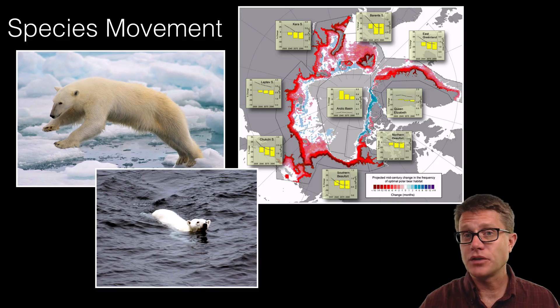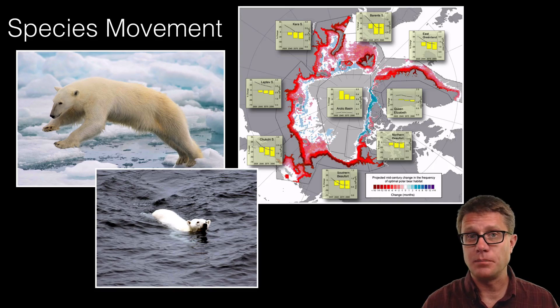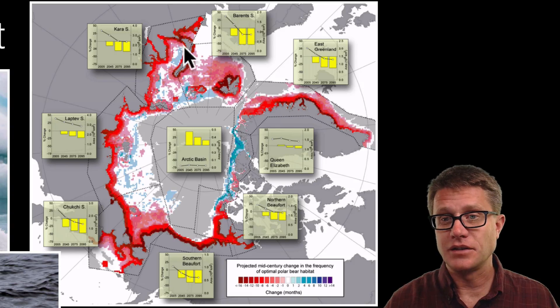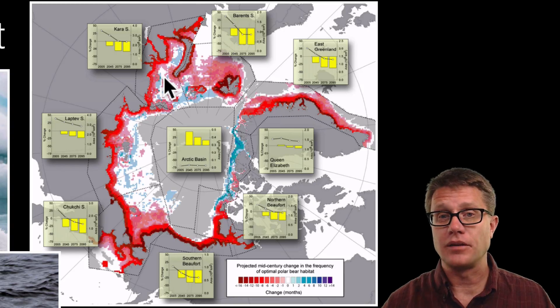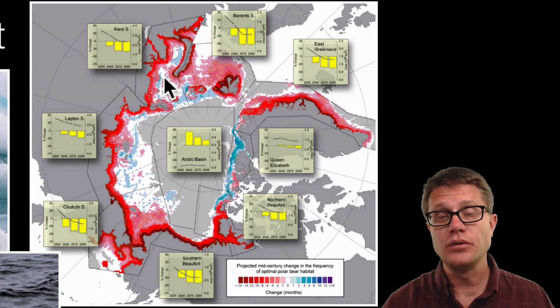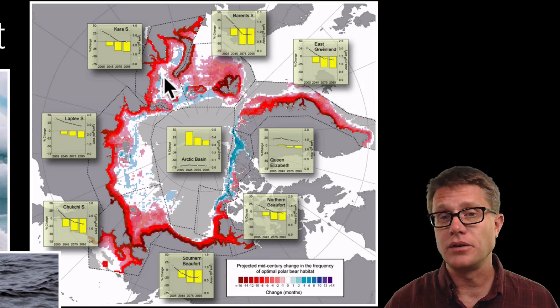Now as the climate changes, animals can move. And so polar bears are going to be impacted. This is a distribution of prime polar bear habitat. And you can see it is being impacted all the way around the pole. Now if polar bears do not go extinct, what are they going to do? They are going to move into new areas. And they are going to exploit new niches.